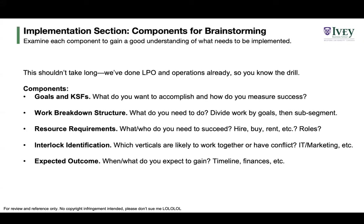For effective implementation, there are five key components. First, set your goals and key success factors — what do you want to do and how do you measure it? Second, look at your work breakdown structure — make a comprehensive list of what you actually have to do, then group or merge similar items. Third, look at what resources you need — people, materials, who's involved.